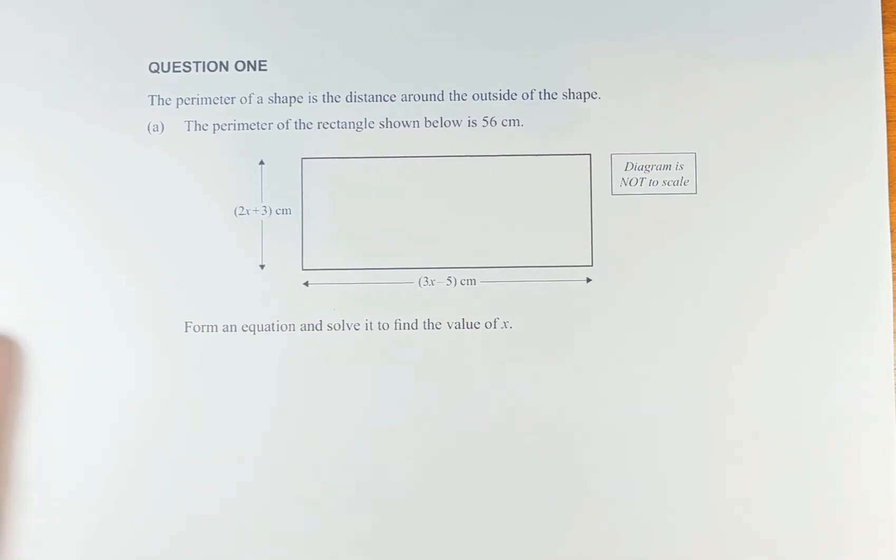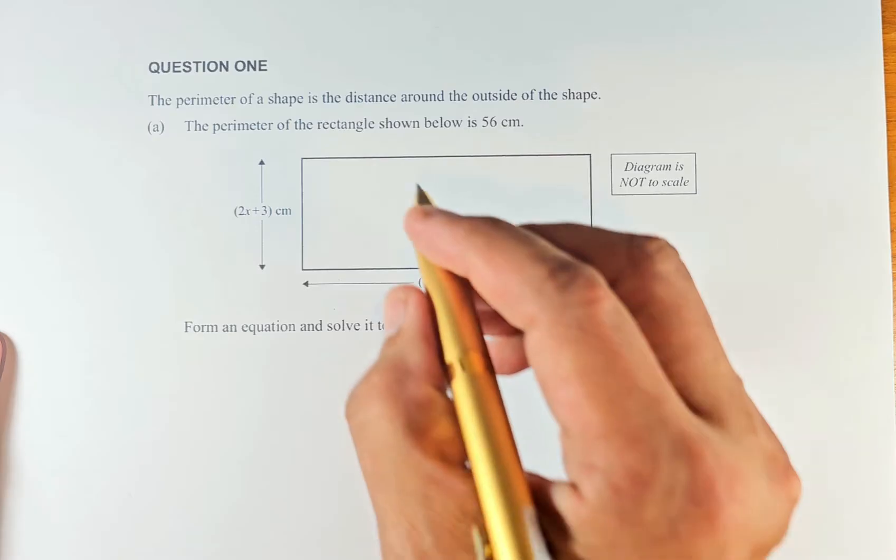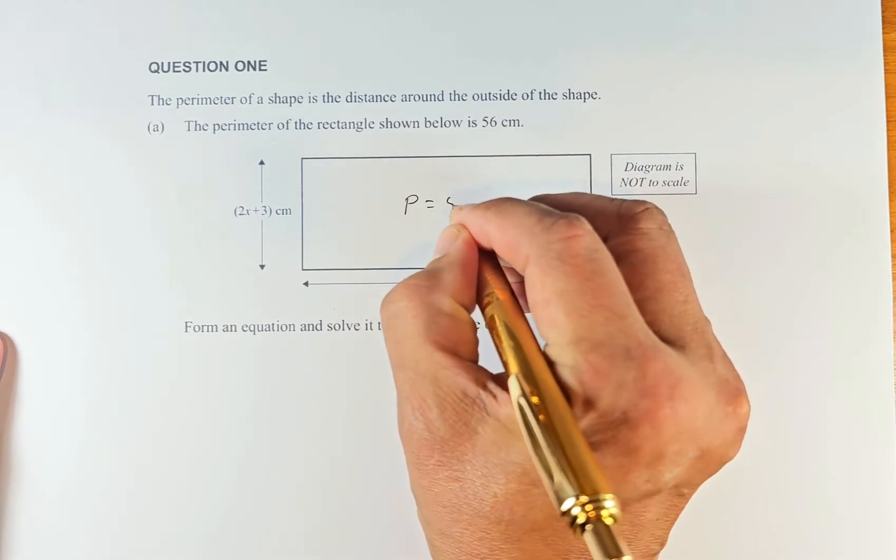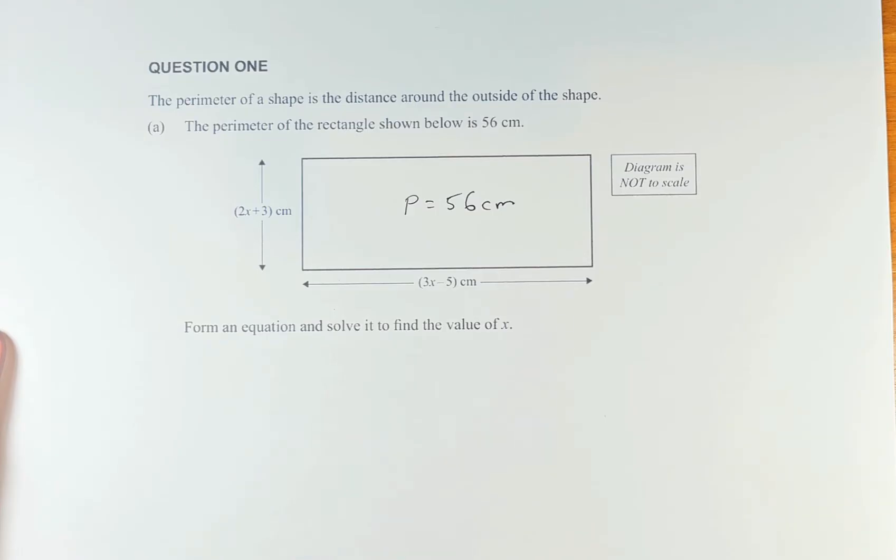The question is: the perimeter of a shape is the distance around the outside of the shape. The perimeter of the rectangle shown below is equal to 56 centimeters. You are going to form an equation and solve it to find the value of x.